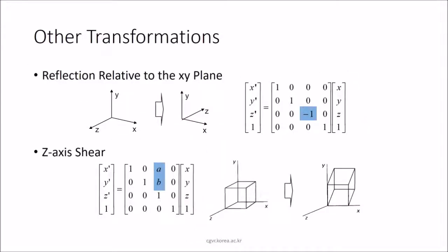Other transformations include reflection relative to the xy-plane — where x-dash, y-dash, z-dash uses minus 1 in the matrix — and z-axis shear, where parameters a and b are used in the shear matrix.